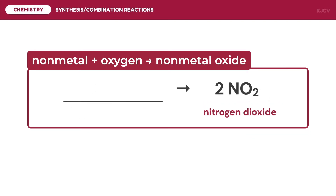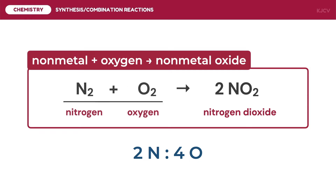For the next example, we identify reactants needed to form 2 moles of nitrogen dioxide. The ratio of nitrogen to oxygen in the product is 2 nitrogen for every 4 oxygen. Since nitrogen and oxygen are both diatomic elements, a subscript of 2 is written for both reactants. We then use 2 as a coefficient of oxygen to satisfy the 2-to-4 ratio. The complete balanced reaction is 1 mole of N₂ reacting with 2 moles of O₂ to form 2 moles of nitrogen dioxide.